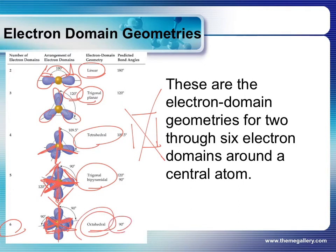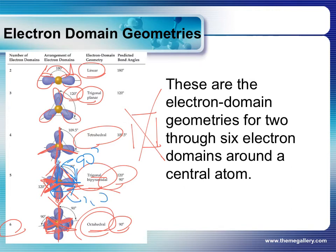In the trigonal bipyramidal, there are actually two different angles. If you're talking about the angle between an axial and an equatorial position, that is 90 degrees. If you're talking about the angle between two of the equatorial areas, that is 120 degrees. So there are two different angles. We're going to go through each one, but I just wanted to give you an overview.